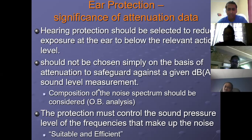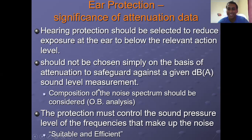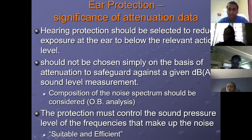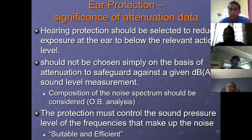The only thing really important here for Unit B is this point: hearing protection should not be chosen simply on the basis of attenuation to safeguard against a given dBA sound level measurement. The composition of the noise spectrum should be considered in the octave band analysis. So remember, if you didn't do that session, I really wanted to cover it and the octave band analysis is really important.